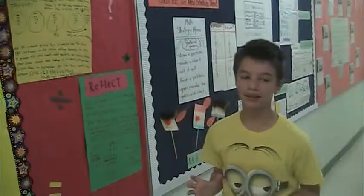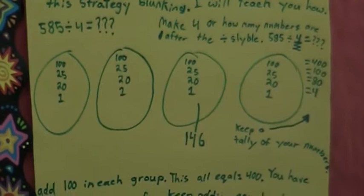When you're dividing, you could use many strategies, but one of Rayleigh's favorites is the chunking strategy. Our question was 585 divided by 4.